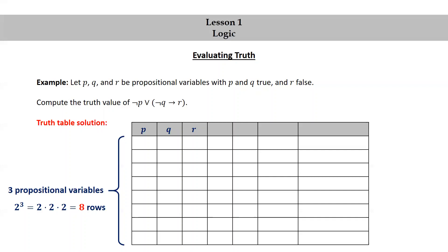For the first column corresponding to p, we put 4 T's followed by 4 F's. For the column corresponding to q, we alternate 2 T's, 2 F's, 2 T's, 2 F's. And then for the column corresponding to r, we alternate T, F, T, F, T, F, T, F. That generates all possible truth assignments for the propositional variables.